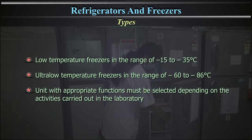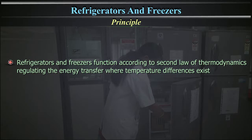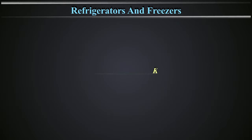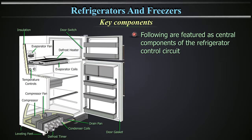A unit with appropriate functions must be selected depending on the activities carried out in the laboratory. Refrigerators and freezers function according to the second law of thermodynamics, regulating the energy transfer where temperature differences exist. Modern refrigerators and freezers are thermal systems which function mainly using a cycle called compression, where refrigerant gas with special properties achieving heat transference is used.